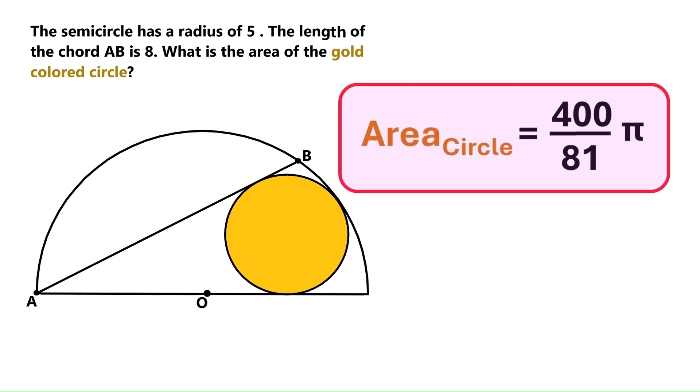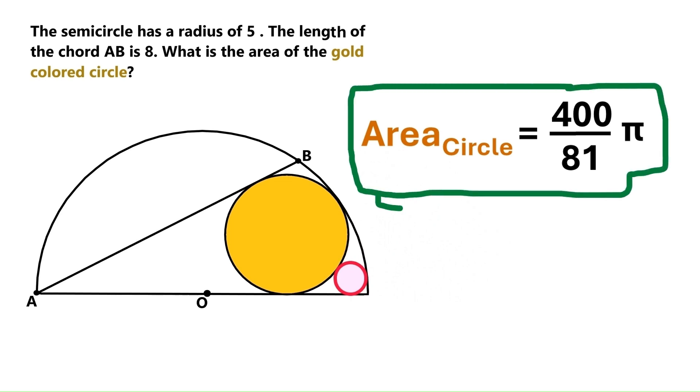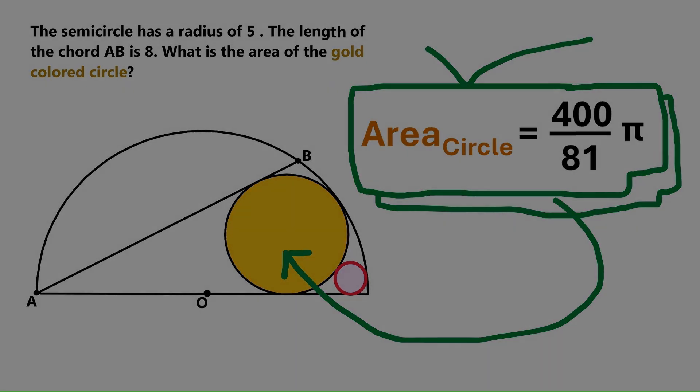Thanks son! So there we are people! We've found the area of the gold circle, and it's 400 pi over 81. So if you enjoyed this video, please consider pushing the like button. And make sure you're subscribed, so that you don't miss our future videos. Have a good day, and see you soon!